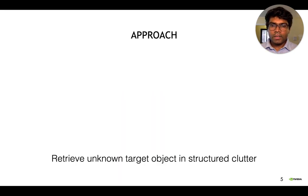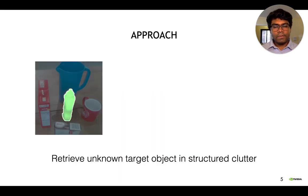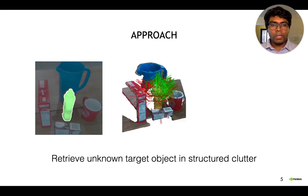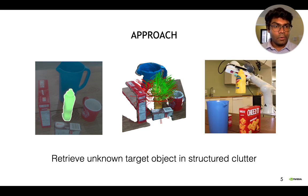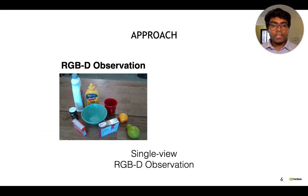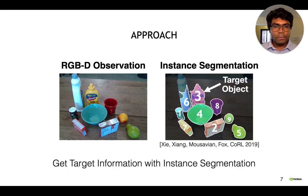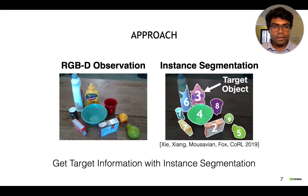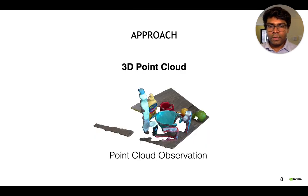For our approach, the task is to retrieve a specific target object in a cluttered scene with other unknown objects. We're going to use the 3D point cloud information to generate 6DOF grasps and execute this on the robot without colliding with the scene. Our approach just needs a single-view RGBD observation, and we also assume we have instance segmentation so that we can visually segment out the different objects in the scene. Let's say the task is to grasp the mustard bottle, which is object number 3 at the very back.